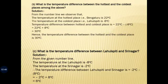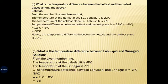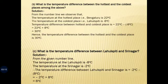Next part: from the given number line, the temperature at Lahulspiti is minus 8 degree Celsius and the temperature at Srinagar is minus 2 degree Celsius. Therefore, the temperature difference between Lahulspiti and Srinagar is minus 2 minus (minus 8), which equals minus 2 plus 8, giving plus 6 degree Celsius. Here we are taking the difference between two negative integers but the answer is positive.